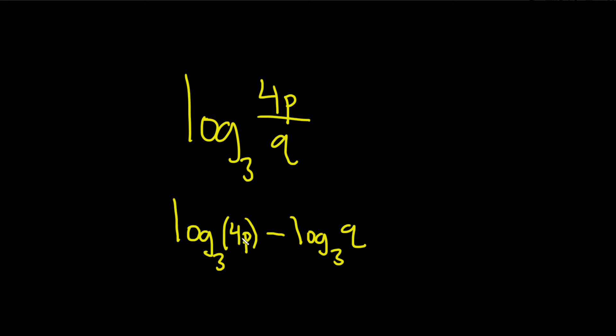And this is times, so whenever you have multiplication it turns into addition. This will become log base 3 of 4 plus log base 3 of p. And then you still have this one here minus log base 3 of q.